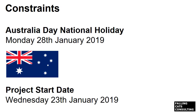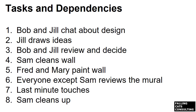The project has two constraints at this stage. Australia Day is a national holiday on Monday the 28th of January, and Bob wants the project to start on Wednesday the 23rd of January. Jill has made a rough list of the tasks and dependencies. First, Bob and Jill will chat about the design for the mural. Jill will then draw up the ideas. Bob and Jill will review those ideas and decide on the best one. Sam needs to clean the wall. Fred and Mary paint the wall. Everyone except Sam checks out the mural. There might be some last-minute touch-ups, and Sam cleans up all the mess.